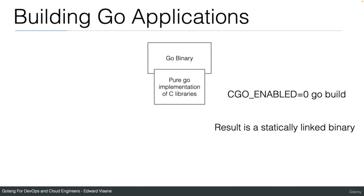With CGO_ENABLED=0, the result is a statically linked binary — you're not linking to the C library anymore. Instead of using C functions, there's a pure Go implementation, for example in the net package. This results in one single portable binary that works on any Linux system it was built for. You would still need to cross-compile for Windows or Mac. If you want to run on Linux, Mac, and Windows, you would have three statically linked binaries.